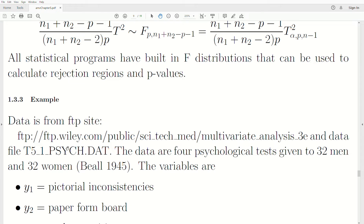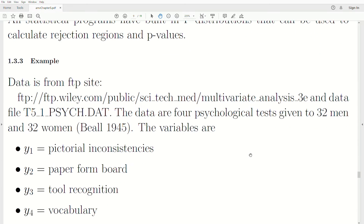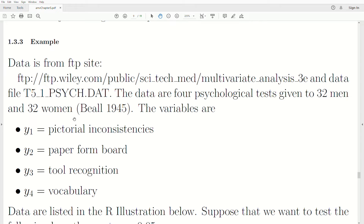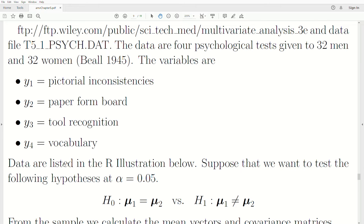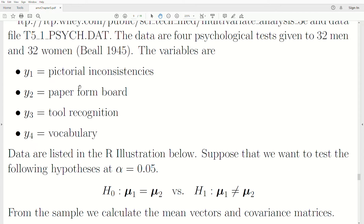Let's look at an example. The data is from an FTP site, which is listed here. I use a data file called T51_PSYCH.DAT. The data are four psychological tests given to 32 men and 32 women. The variables are pictorial inconsistencies, paper form board, tool recognition, and vocabulary. The data will be partially listed in the R illustration below.